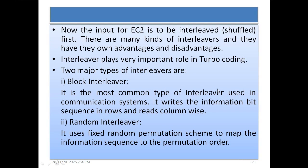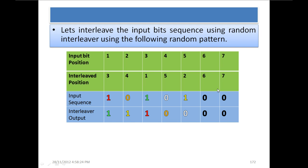Random interleavers use a fixed random permutation scheme to map the information sequence to the permutation order. Let's interleave the input bit sequence using a random interleaver with the following pattern: the bit at position 1 goes to position 3, position 2 goes to 4, position 3 goes to 1, position 4 goes to 5, position 5 goes to 2, 6 stays at 6, and 7 stays at 7. The input sequence was 1, 0, 1, 0, 1, 0, 0.